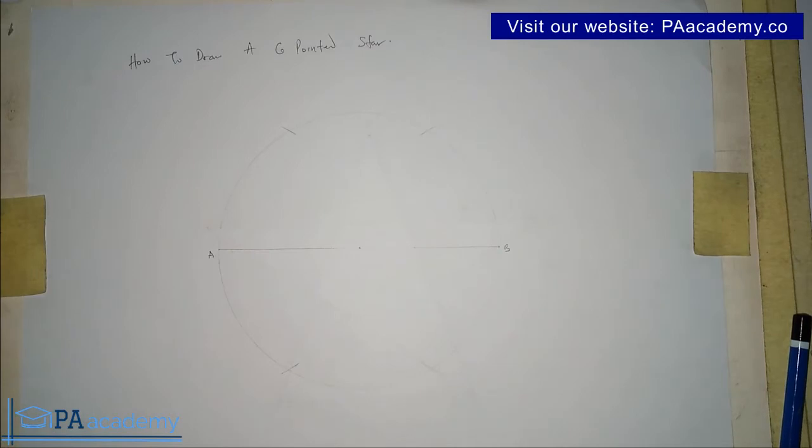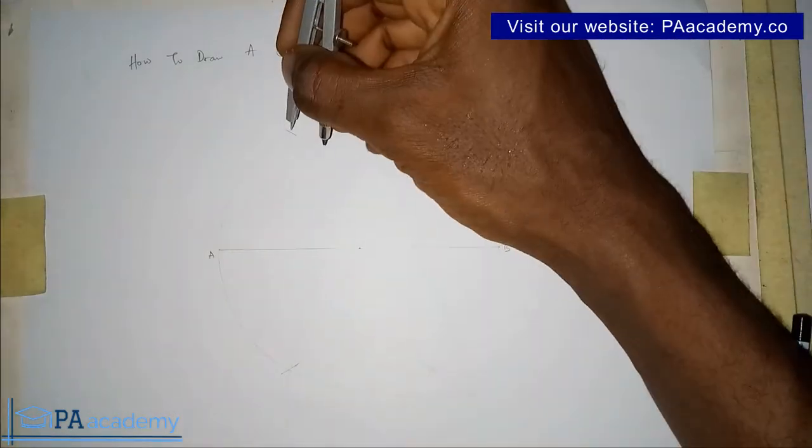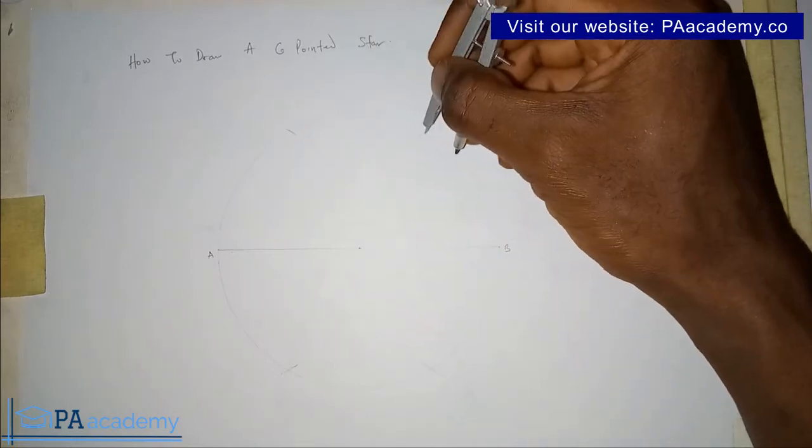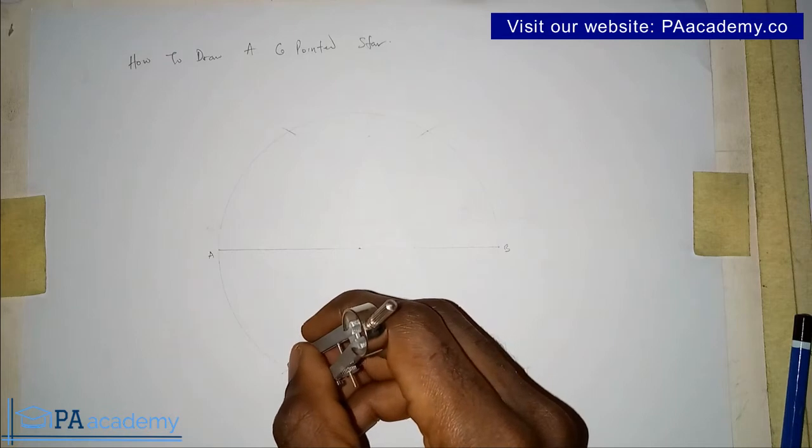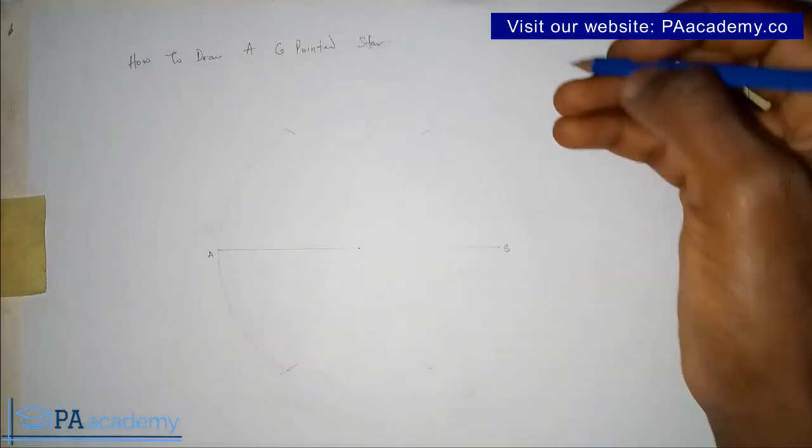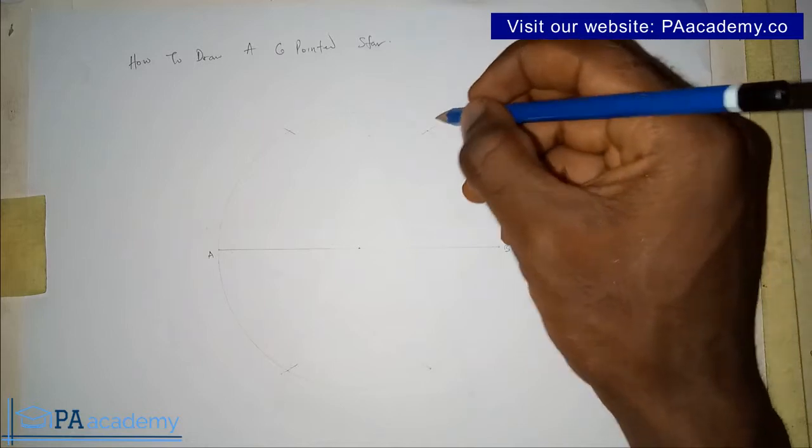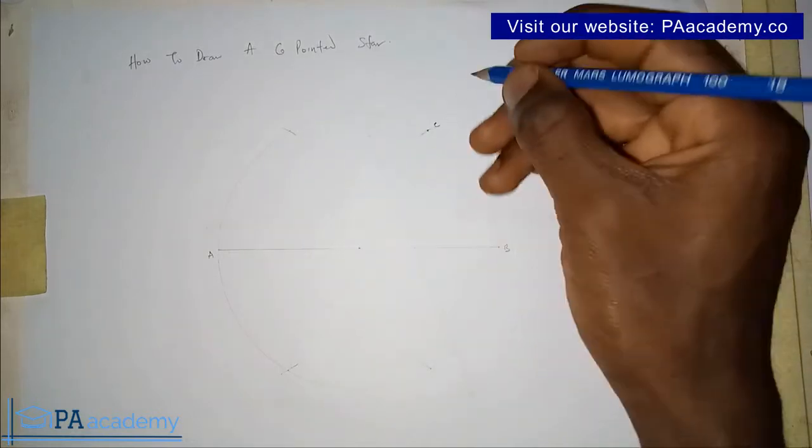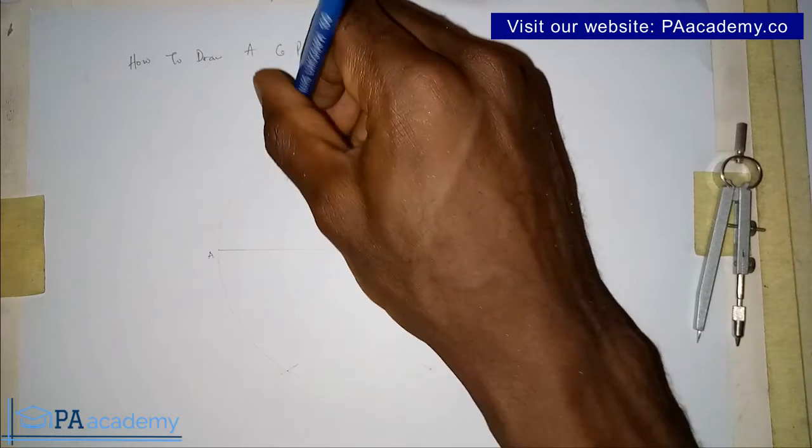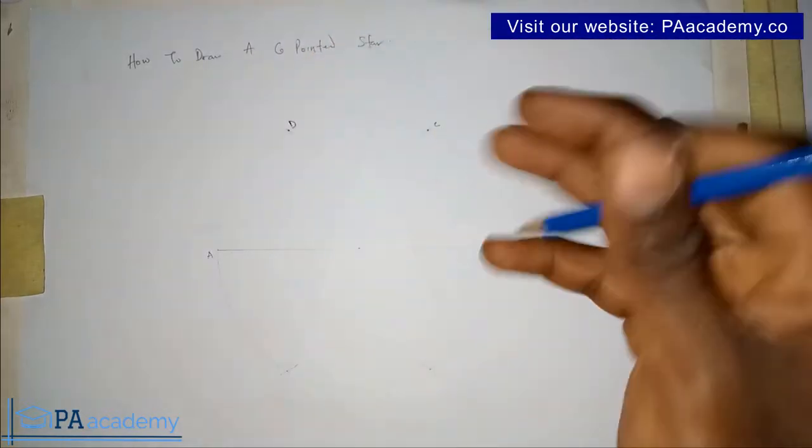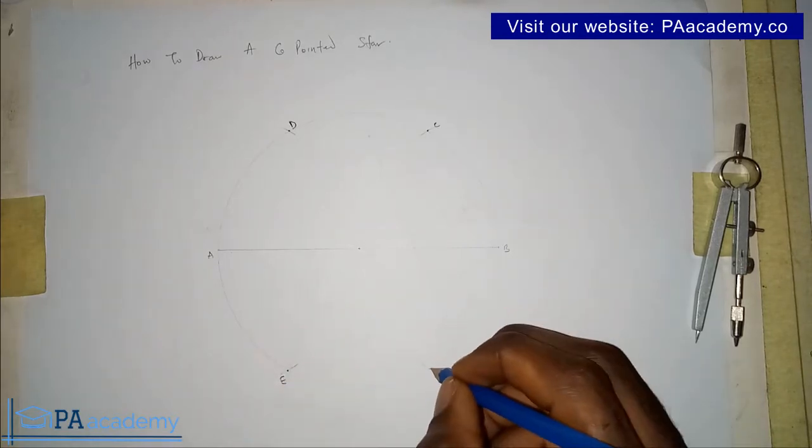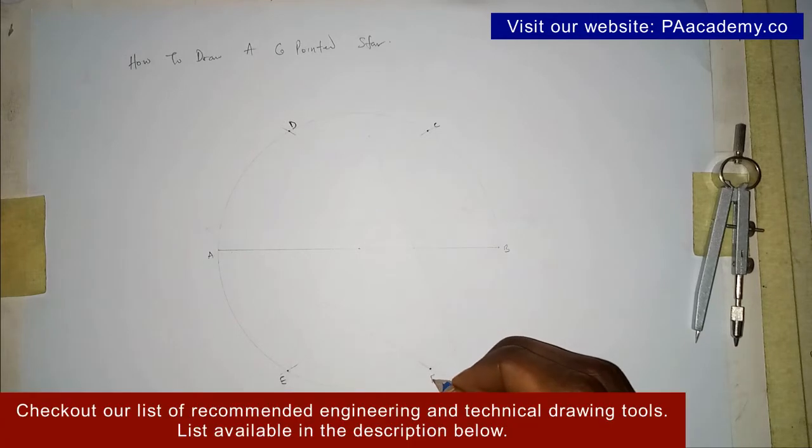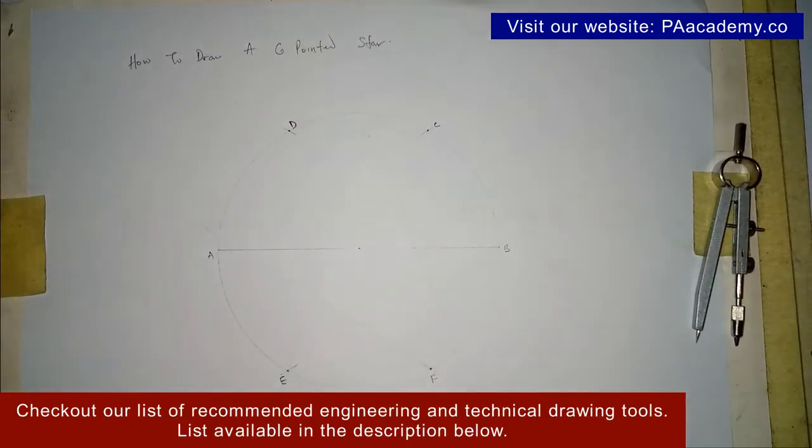So having done that, let's note those points. So this is where the arc is touching the circle. This is it. Another point here. This is another point here. And this is another point here. So let's name those points. Let's call this point C. Let's call this point D. And let me call this point E. And let me call this point F. So all these points are going to be the vertex for the six-pointed star we are going to be drawing.